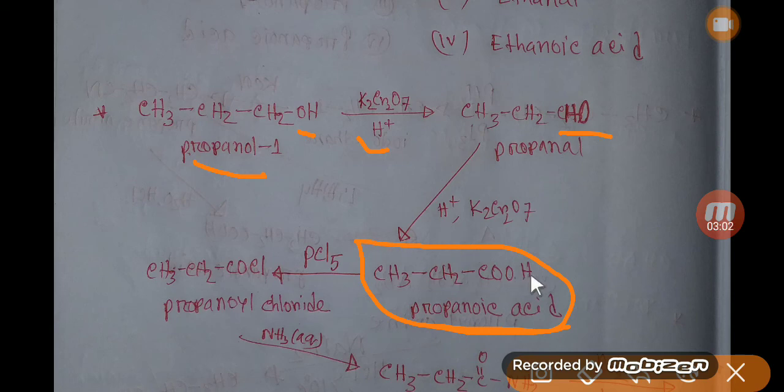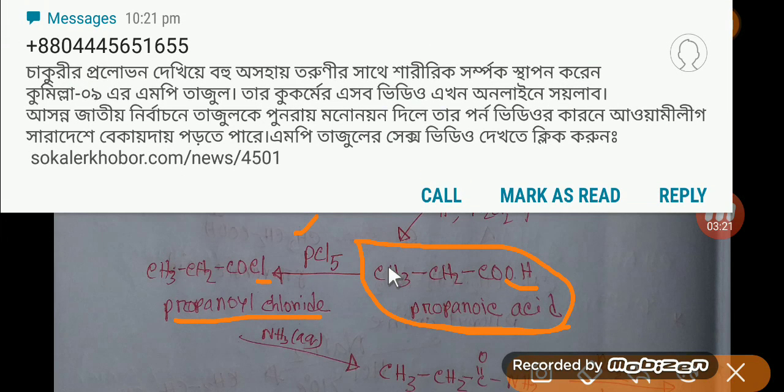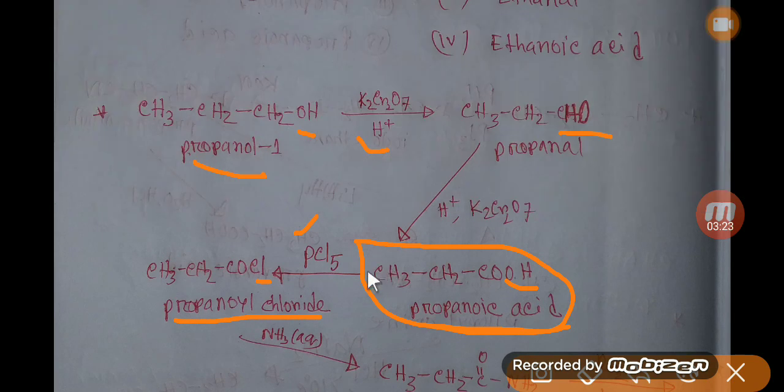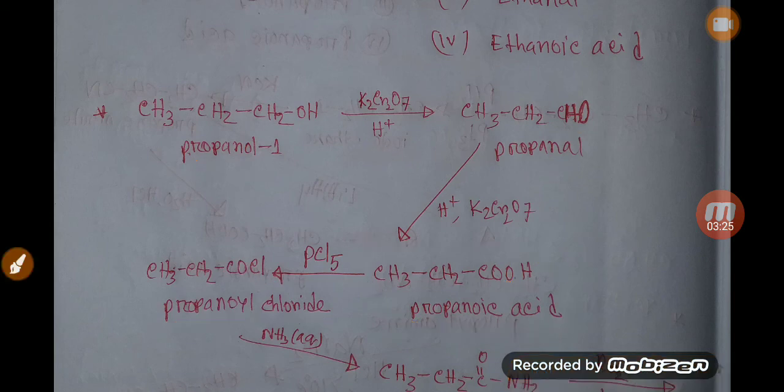If you add here phosphorus pentachloride, then OH of carboxylic acid will be replaced by chlorine, and you will get propanoyl chloride. You will get a link in the description box of this video. Please check that.